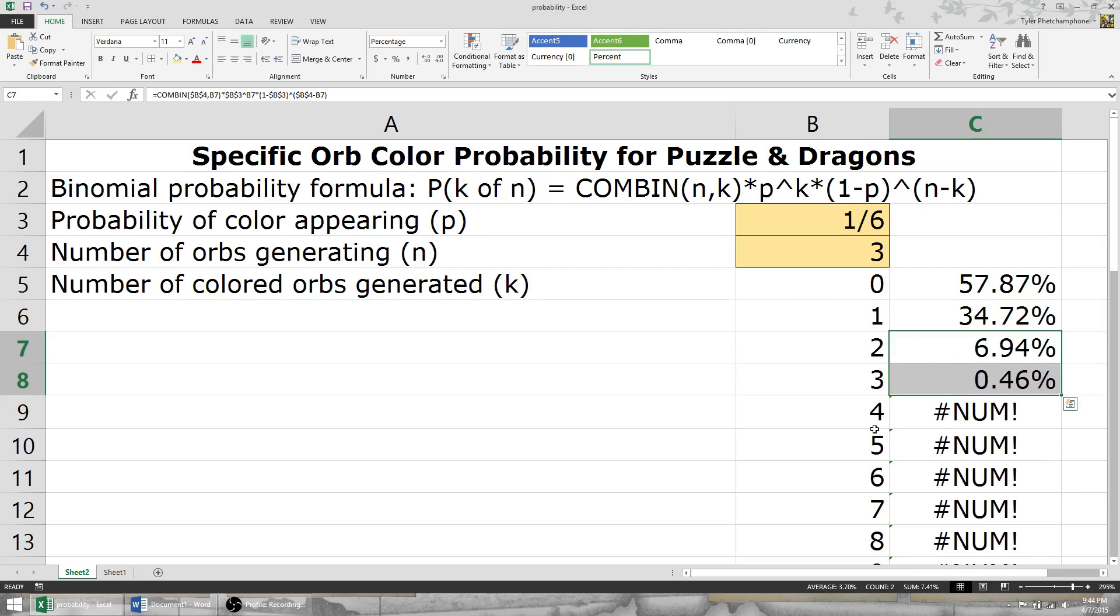It looks like the total is about 7.4%. That doesn't seem like a very good chance. We even have a 57.87% chance of not even generating a purple orb.